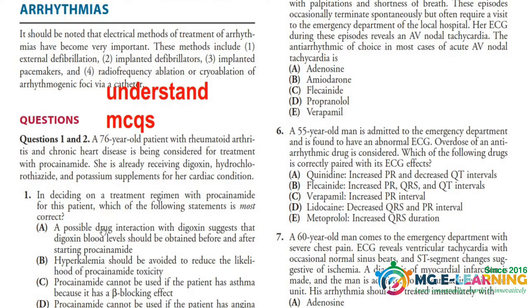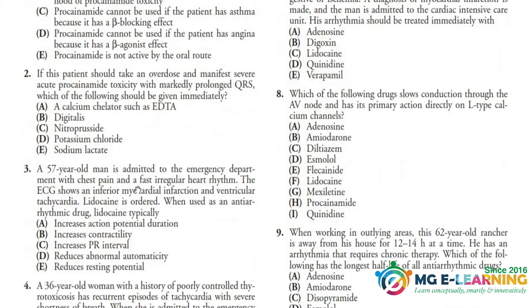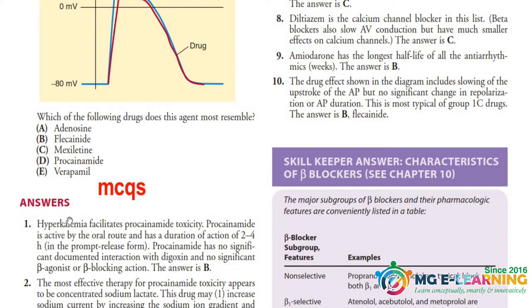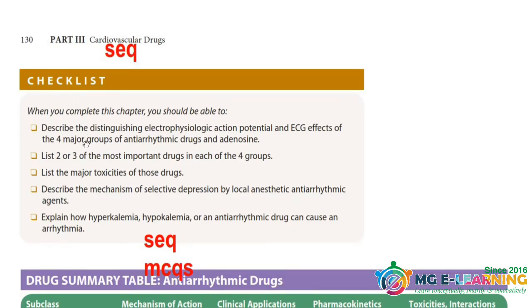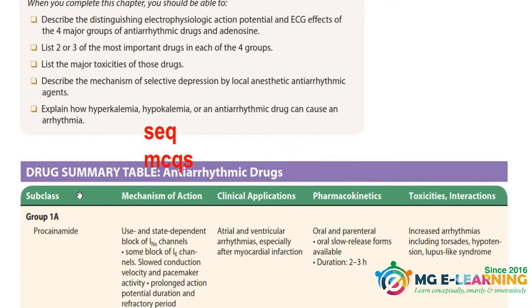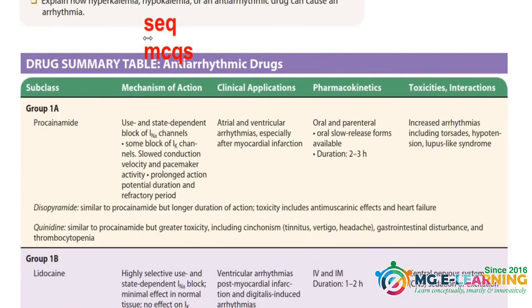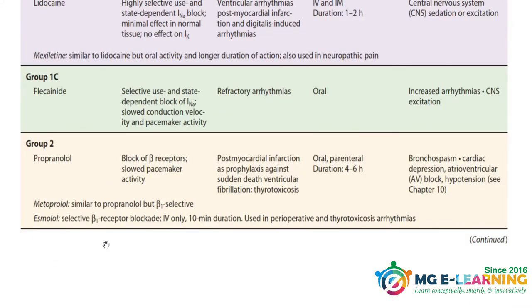For each MCQ option, understand why a true option is true and why a wrong option is wrong. You can make separate notes from the MCQs and answers provided. Use the checklist and prepare your chapter according to your documents. The summary table is very important for MCQs as usual. Propranolol in Group 2 is a very important drug. That's all about this chapter.